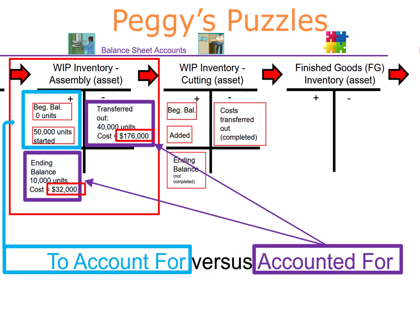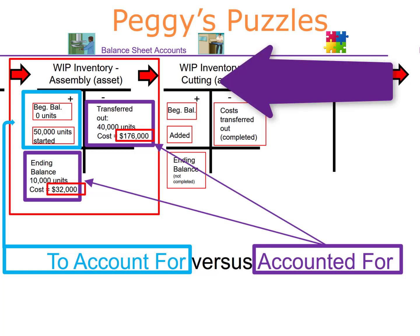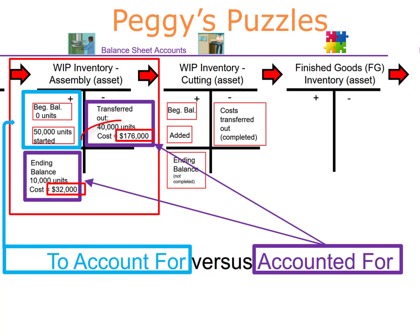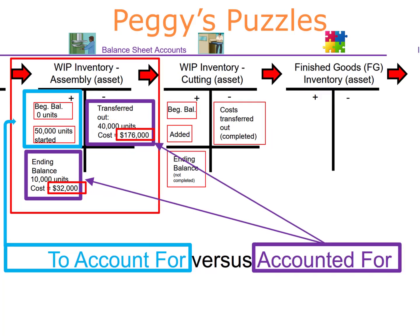Next, we will create the production cost report for the cutting department. It's key to remember that 40,000 units were transferred into the cutting department.